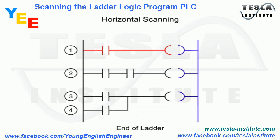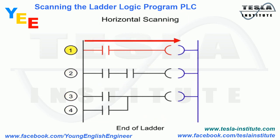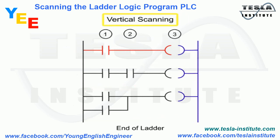The PLC scan follows a specific pattern to execute the program. The first pattern is referenced as horizontal scanning, where the program is examined from the first command, left to right across the rung, and top to bottom. Vertical scanning, on the other hand, examines the input and output instructions from the first command, vertically, column by column, and left to right.